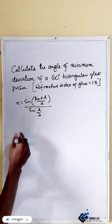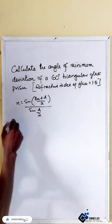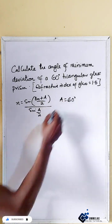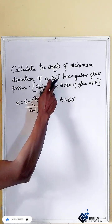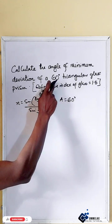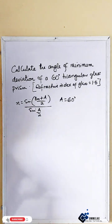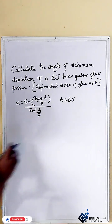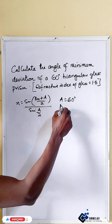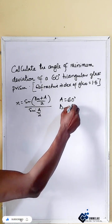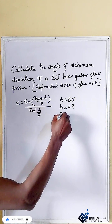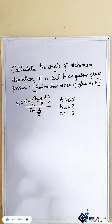We are given here that a equals 60, which is the refractive angle of the glass. And we are asked to find dm. The refractive index of the glass equals 1.5.